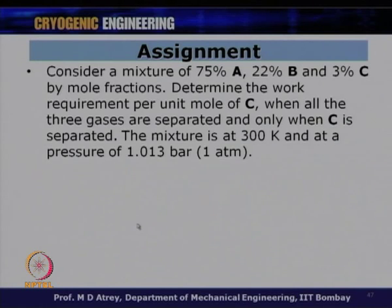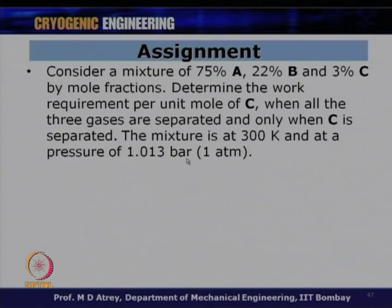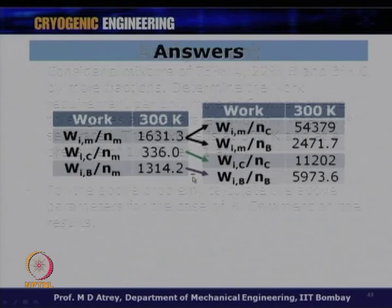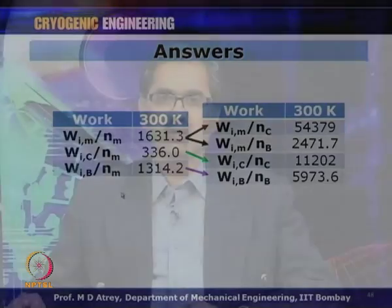An assignment is given: for a mixture of gas A, gas B, and gas C with given mole fractions, determine the work requirement per unit mole of C when all three gases are separated and when only C is separated. Also calculate the same parameters for gas B and comment on the results. The answers are provided for self-checking.